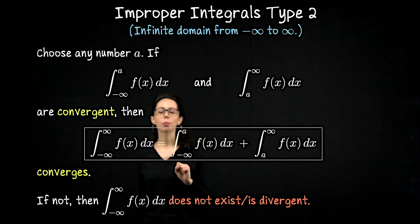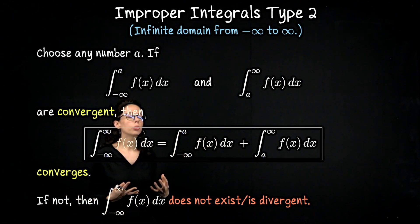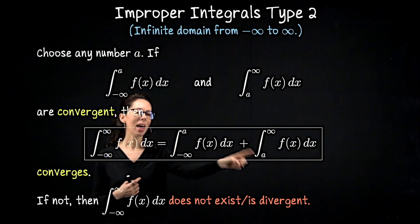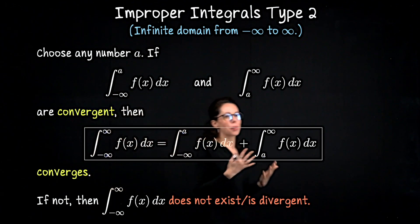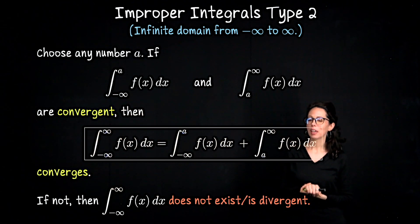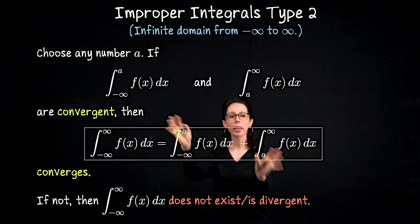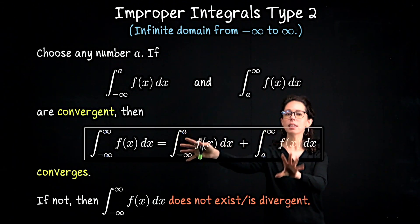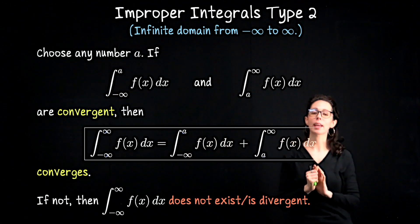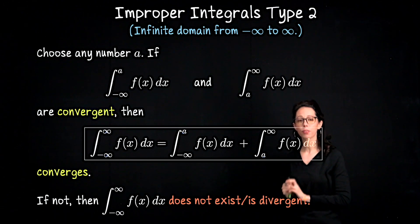What we need to do is break that computation up into two separate integrals where you choose some finite number a. In every single example today, a is going to be zero because zero is a great number to plug into antiderivatives in most cases. We take any such integral, break it into these two pieces, and then we need each of these pieces individually to exist and equal a finite number in order to conclude that the improper integral converges.